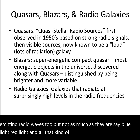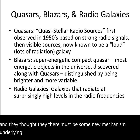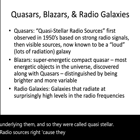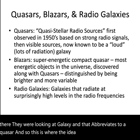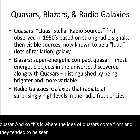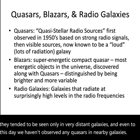This was a big surprise and people thought there must be some new mechanism underlying it. So they were called quasi-stellar radio sources, because you could see lots of stars when looking at the galaxy — and that abbreviates to quasar. Quasars tended to be seen only in very distant galaxies, and even to this day we haven't observed any quasars in nearby galaxies, which turned out to be a good thing, as you'll see.